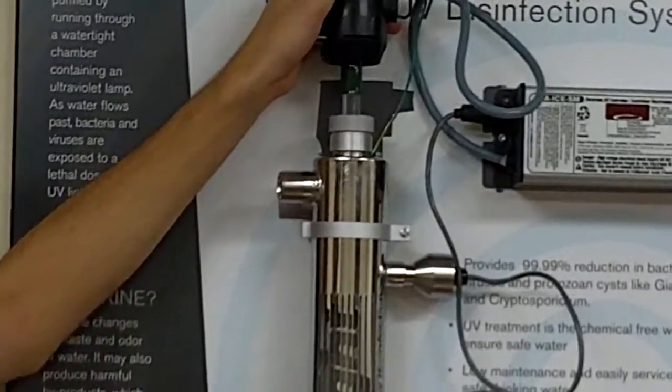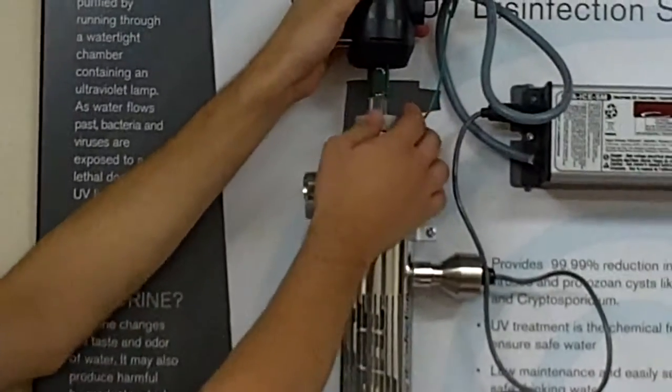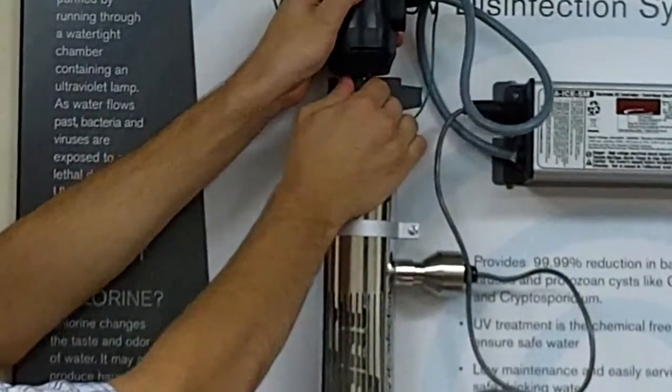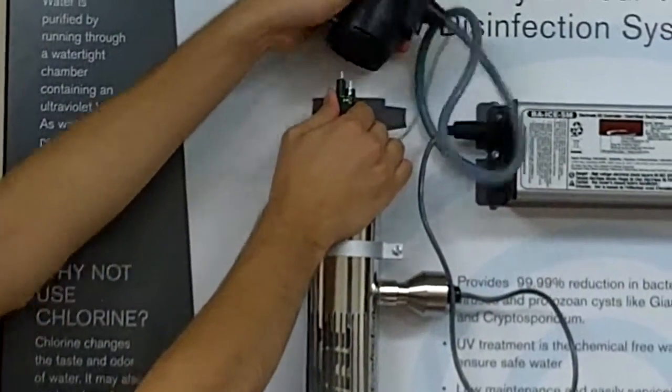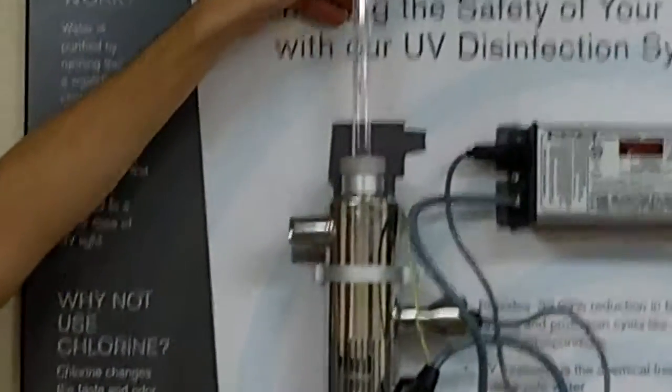You can see right here that this lamp actually stayed right in the connector. That doesn't always happen, but if it does, the easiest thing to do is just to grab the lamp right here and hold it while you pull the connector off. You can just let that hang like so and take the lamp out.